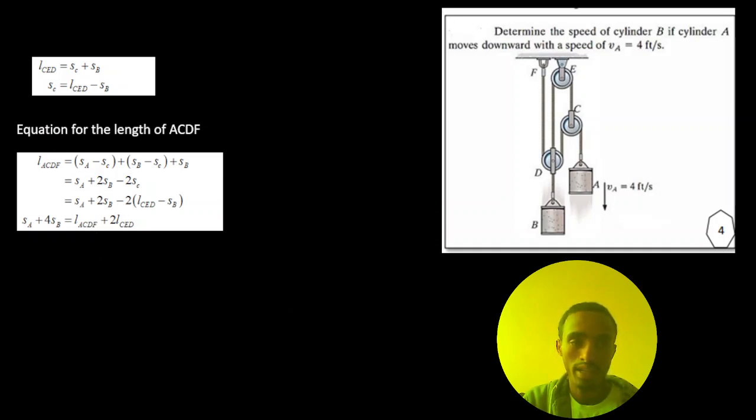By substituting the value of STC, then simply you can differentiate this length and we can calculate the acceleration and the velocity of block A or block B.